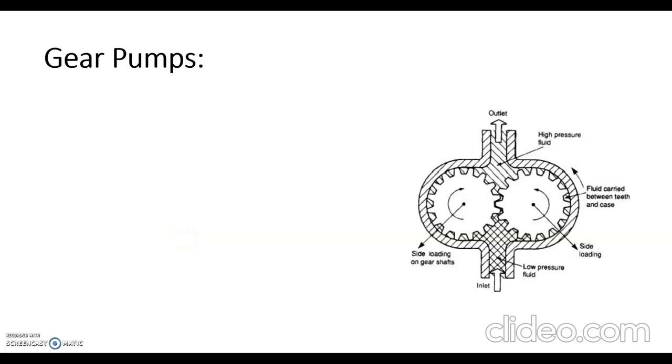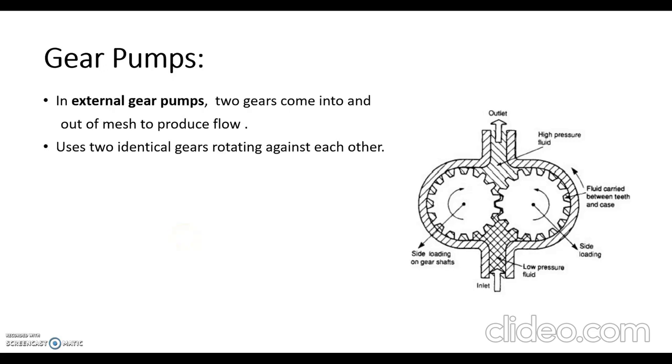We have gear pump first. So let's see the components of gear pump. Gear pumps are divided into external gear pump and internal gear pumps. This is the diagram of external gear pump, which consists of a housing with two identical gears which are meshed with each other.